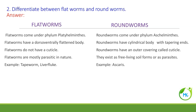Differentiate flatworm and roundworm. Flatworms belong to phylum Platyhelminthes whereas roundworms belong to phylum Aschelminthes. Flatworms have a dorso-ventrally flattened body whereas roundworms have a cylindrical body. Flatworms do not have a cuticle whereas roundworms have an outer covering called cuticle. Flatworms are mostly parasitic whereas roundworms may be free-living or parasitic. Examples for flatworm: tapeworm, liver fluke; example for roundworm: Ascaris.